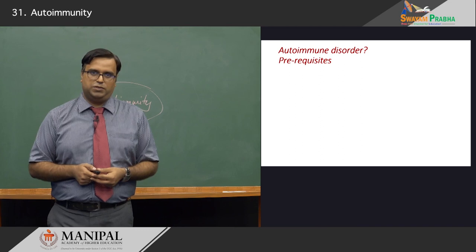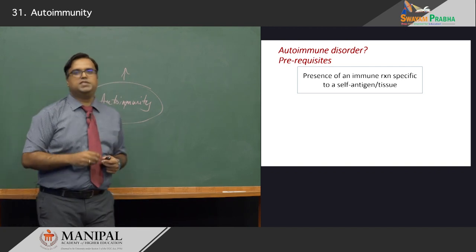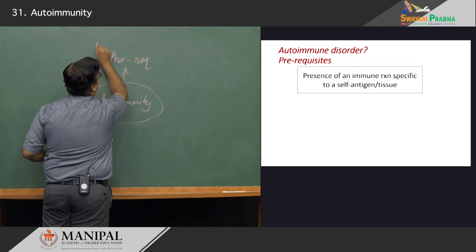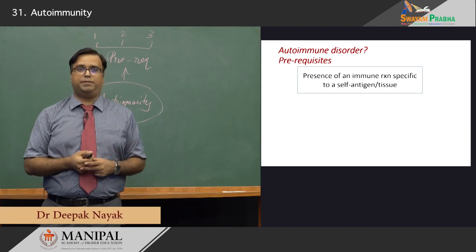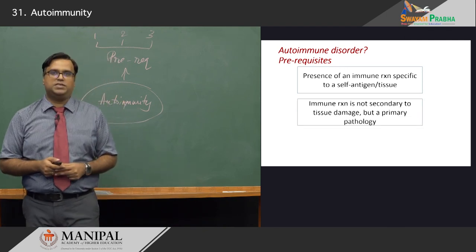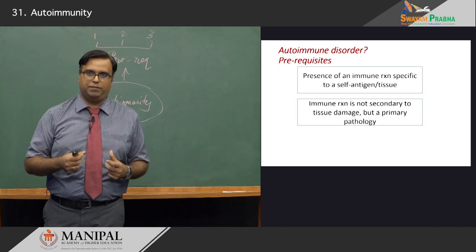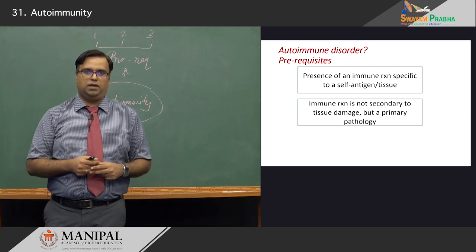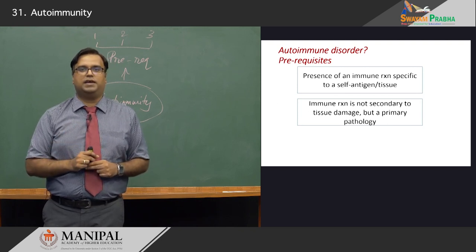There are certain prerequisites before you call autoimmune disorders. The most important one is the presence of an autoimmune reaction which is specific to a particular tissue or self-antigens. This is very important because you have to serologically or histologically demonstrate that these autoantibodies are specifically targeting certain antigens. The second criteria is to demonstrate that this immune reaction is entirely primary — not secondary to tissue damage. As alluded to earlier, you can get tissue damage as wear and tear of the tissues continues, and then an autoantibody response is mounted against that. That is not autoimmunity. You should demonstrate it as a primary pathology.